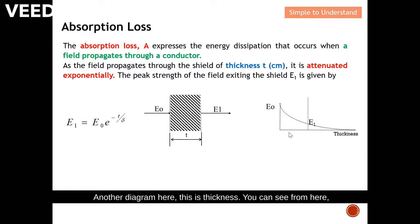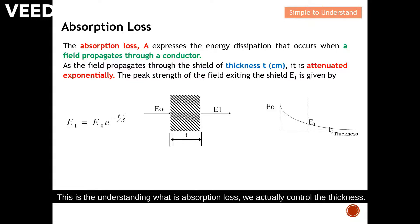This diagram shows thickness on the x-axis. You can see that the thicker the shield, the lesser the E1. So this is the understanding of absorption loss — we actually control the thickness of the shield.